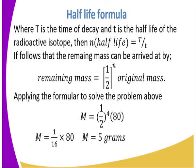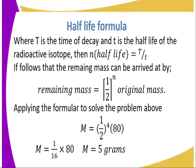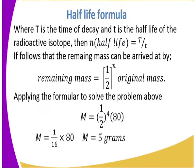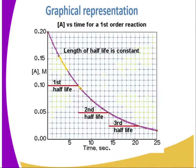Applying the formula to solve the problem: the remaining mass m is given by (1/2)^n multiplied by the original mass. From our example, n = 4, so the remaining mass = (1/2)^4 × 80 = 5 grams. This is the same result we obtained from the step-by-step approach, confirming the formula works correctly.